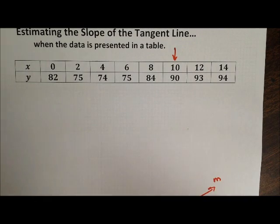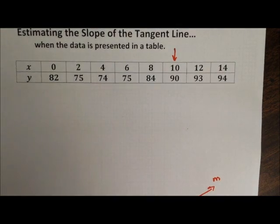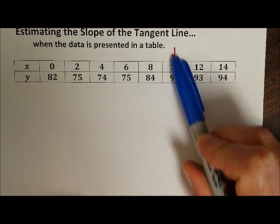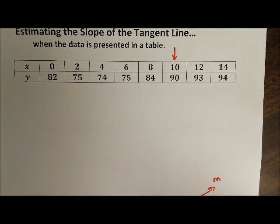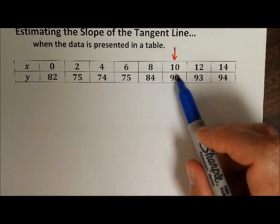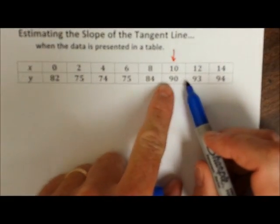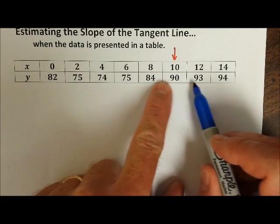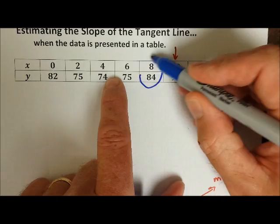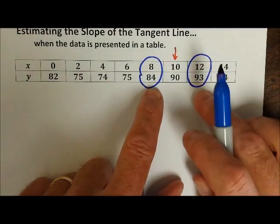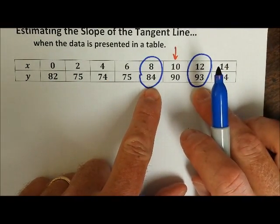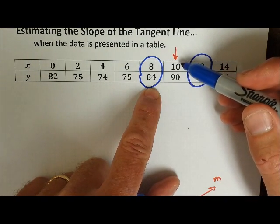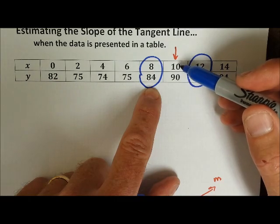Here's how we're going to do it using the information in the table. We need two points to find the slope at this point, so we need another point. We're actually going to step out one spot in either direction from the point of tangency. I'm going to use that information to calculate the slope between those two points, which will represent my estimate — and we can get fairly close to an accurate estimate this way.